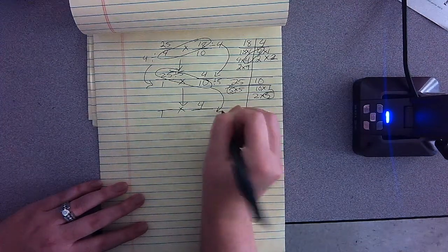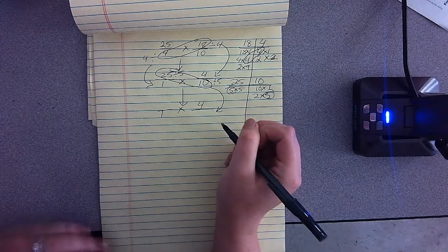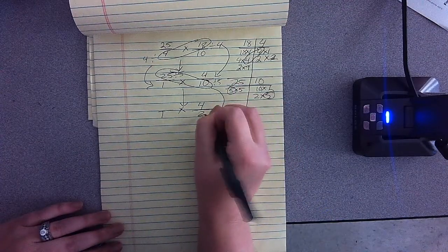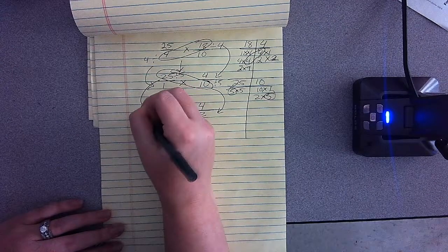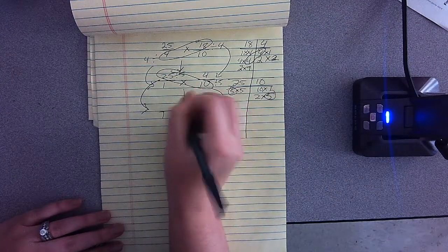I'm going to put the answer to 10, the quotient to 10 divided by five, and the quotient to 25 divided by five, which is five.